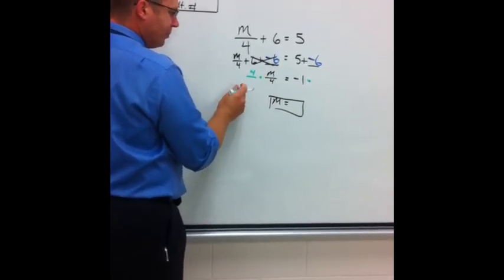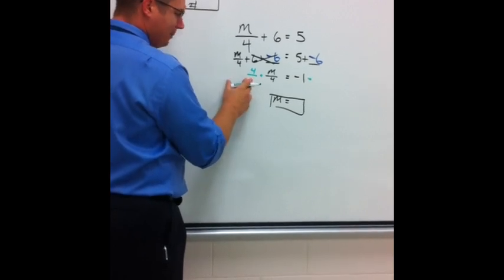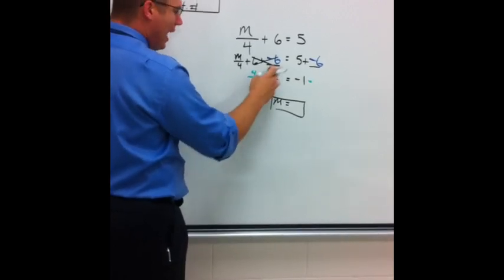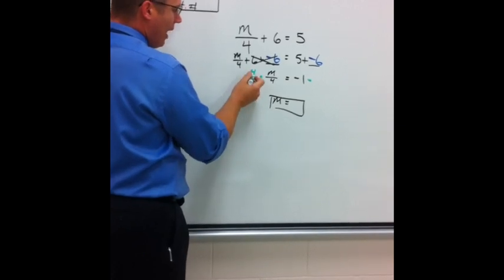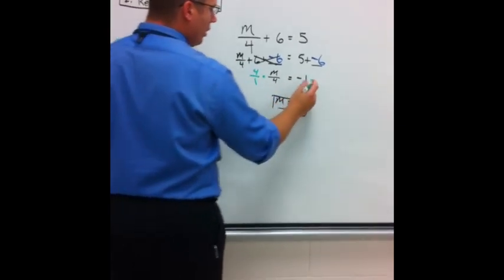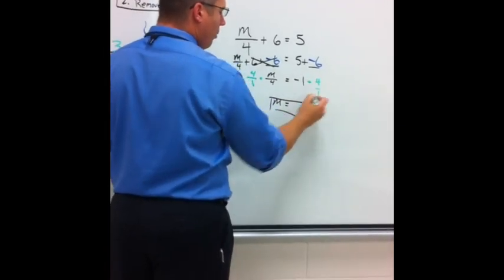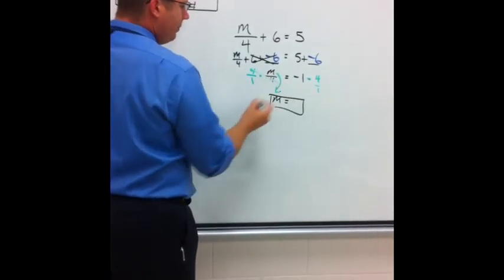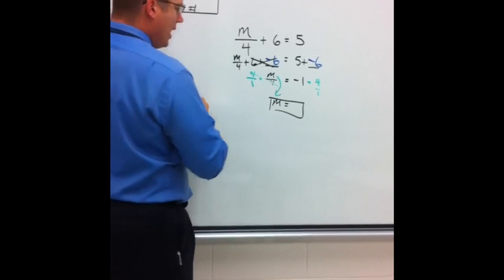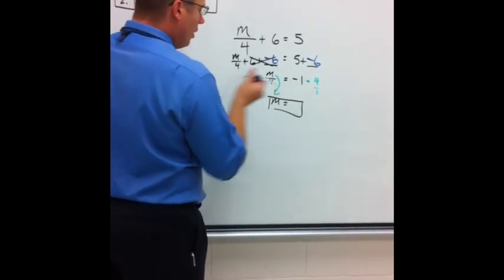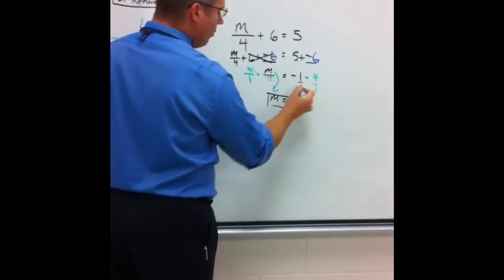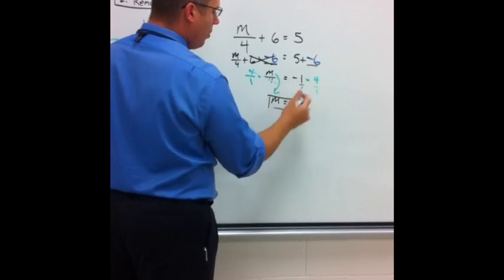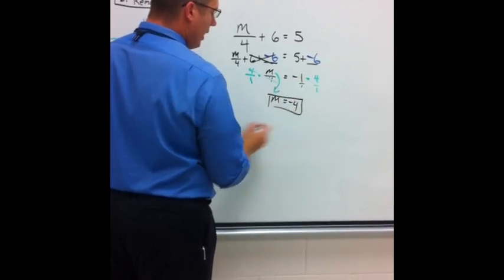The 4 goes up top. Do I want an n at the bottom? No, I don't. Because then the n's would go away. 4 as a fraction is 4 over 1. This side, 4 over 1. The 4's cancel out. I'm left with n on the right-hand side. Negative 1 over 1. Negative 1 times 4 is negative 4.